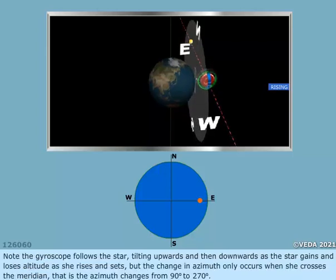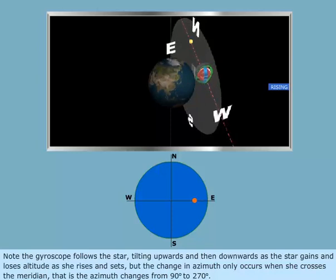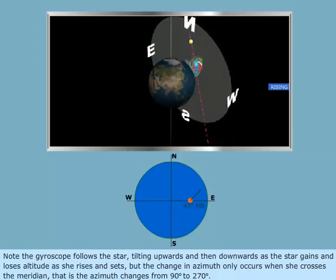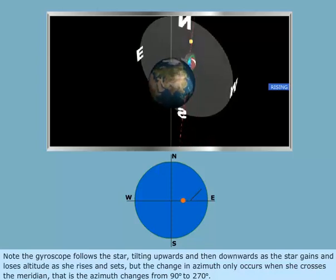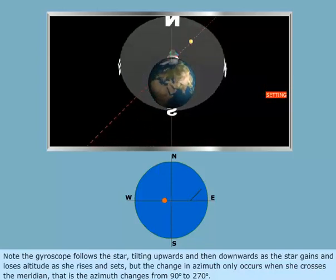Note the gyroscope follows the star, tilting upwards and then downwards as the star gains and loses altitude as she rises and sets. But the change in azimuth only occurs when she crosses the meridian. That is, the azimuth changes from 90 degrees to 270 degrees.